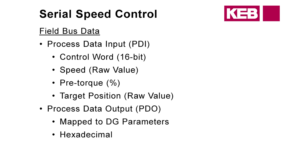With serial speed control, I'm going to break down what's coming over the serial bus itself. We call the information from the controller field bus data. That's going to contain process data inputs, or PDI values — those are values that our drive is looking at from the controller. It's going to contain the control word, a raw speed value, a pre-torque percentage, and a target position. All of these things are coming over the serial bus from the controller, and the drive is looking for these values all the time.